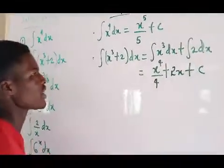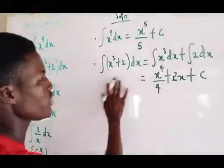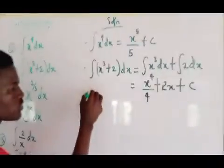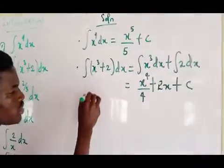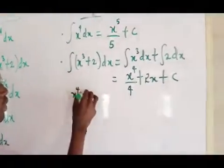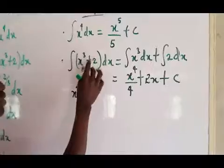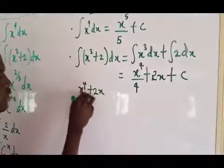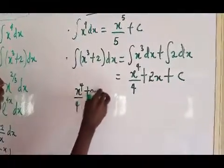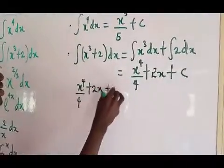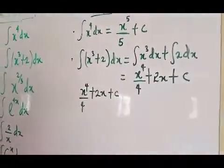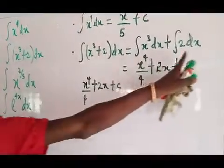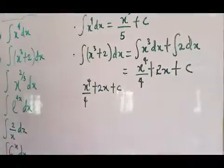So that is the answer. You can also do it directly — a shortcut — by just adding one to the power: x to the power 4 over 4 plus 2x plus c, without going through the splitting process.